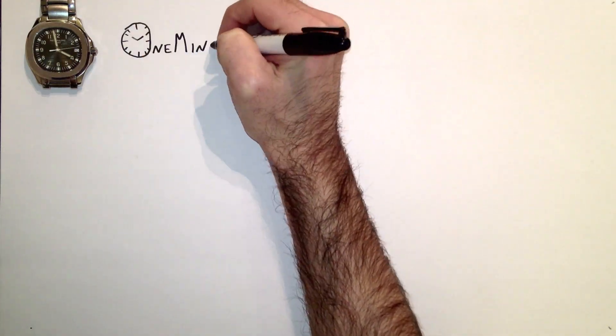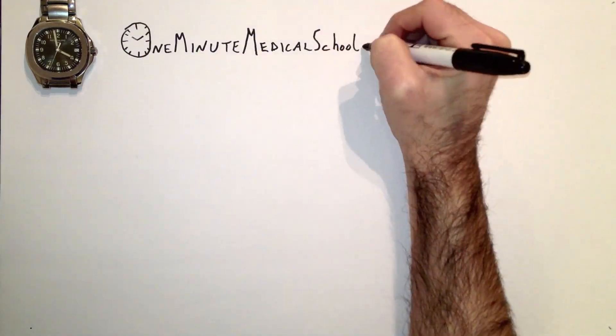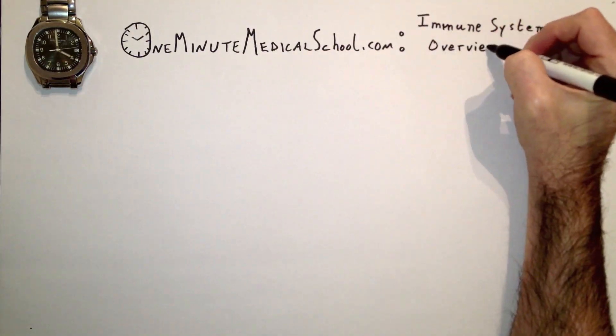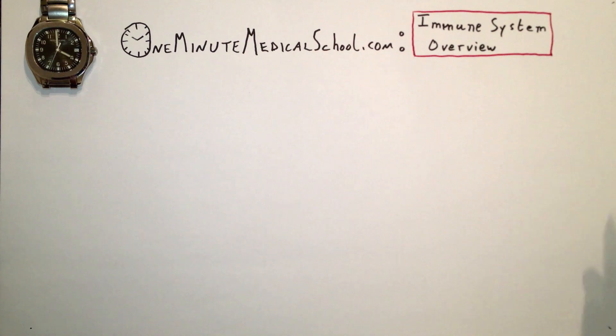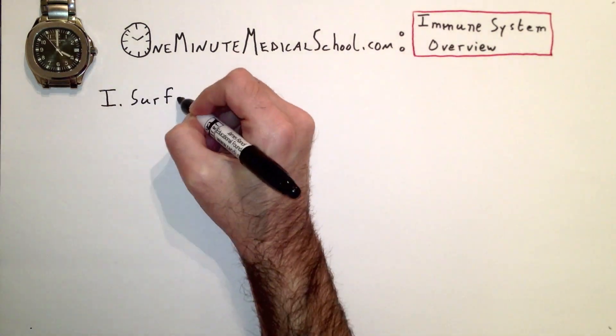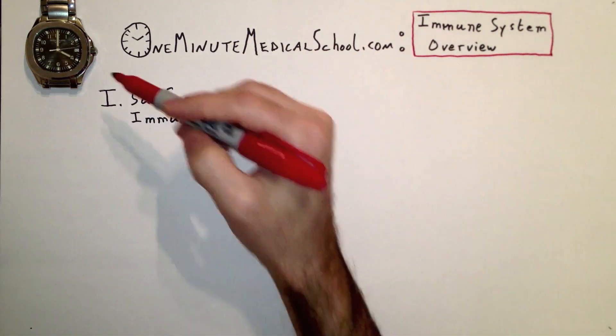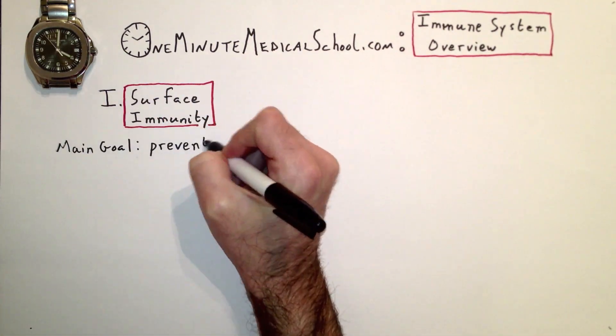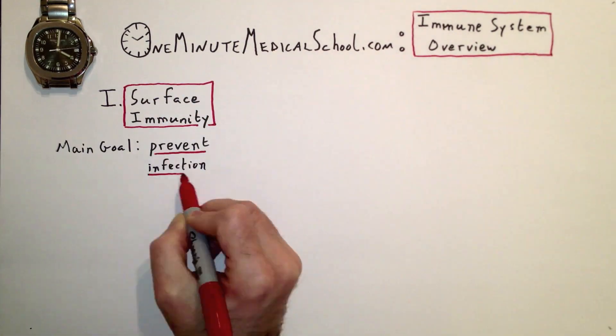Today on One Minute Medical School, let's take an overview of your entire immune system. It has three components. First comes surface immunity, which is designed to prevent you from getting infected.